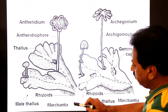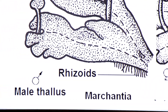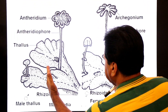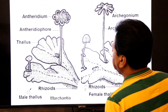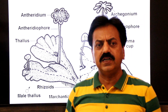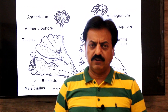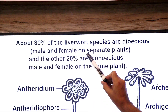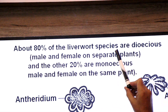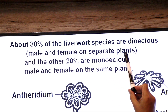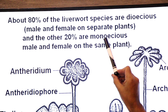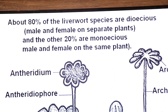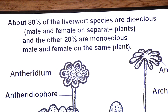Marchantia has a male thallus and a female thallus, meaning the sexes are separated — this condition is called dioecious. About 80 percent of liverwort species are dioecious, meaning the male and female are on separate plants. The other 20 percent are monoecious, meaning both sexes are present on the same plant. Marchantia — genus Marchantia, species polymorpha — is a dioecious species.